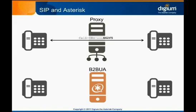You can see in this illustration the path taken between the two phones only has one call ID. This is because the phone, and not the proxy server, is the destination for the call.